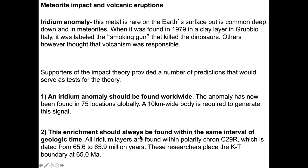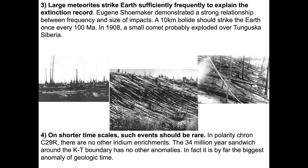This iridium enrichment should always be found within the same interval of geologic time. Indeed, all iridium layers are found within polarity cron C29r — a magnetic period from 65.6 to 65.9 million years ago. These researchers put the extinction event at 65 million years ago. Large meteorites strike the Earth sufficiently frequently to explain the extinction record. Astronomer Eugene Shoemaker demonstrated a relationship between the frequency and size of impacts. Large things hit the Earth seldom; small things hit the Earth very, very regularly. A 10-kilometer-wide bolide should strike the Earth about every 100 million years.